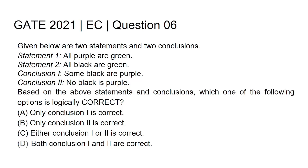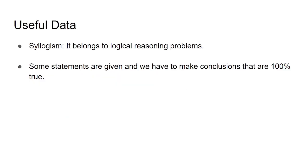This is GATE 2021 Electronics and Communication Engineering, question number six. Two statements and two conclusions are given: Statement one — all purple are green; Statement two — all black are green. Conclusion one — some black are purple; Conclusion two — no black is purple. Option A: only conclusion one is correct; Option B: only conclusion two is correct; Option C: either conclusion one or two is correct; Option D: both are correct.